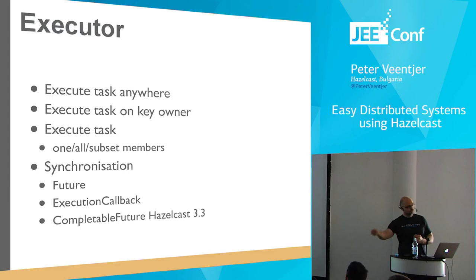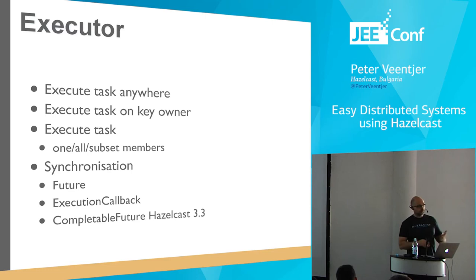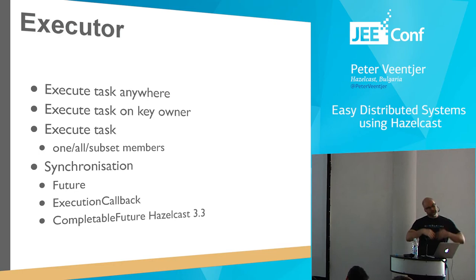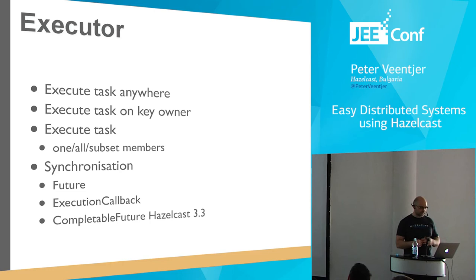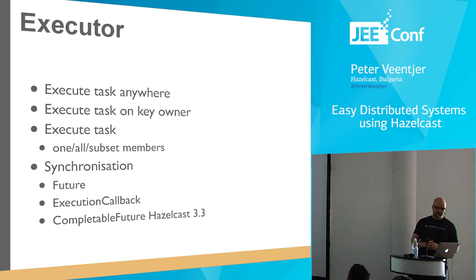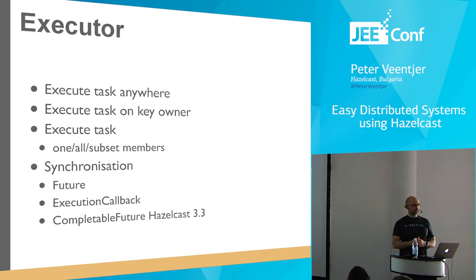We also have the option to execute a task on a particular member of the cluster. We also provide synchronization options, for example, futures. Futures are okay, but the problem is it's a blocking call — your thread is blocked until the call completes, and it often doesn't scale well. That's why we also provide an execution callback. With the execution callback, you say 'execute this task, and when it completes, do this' — so you have a fully asynchronous call. One of the things I'm working on is the CompletableFuture for Java 8. We also need to make sure we provide sufficient back pressure so you don't overload the system with requests.